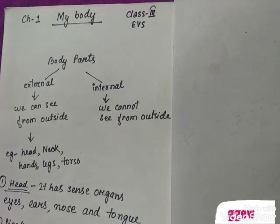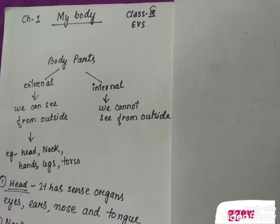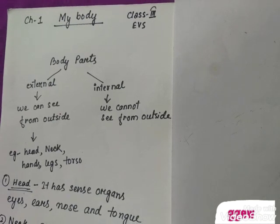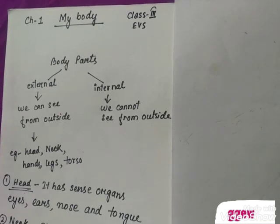Next comes the neck. As I told you before, the neck is the body part which joins our head to the rest of our body. It also helps us move our head upward, downward, left, and right. The movement of the neck helps us to see things in different directions.